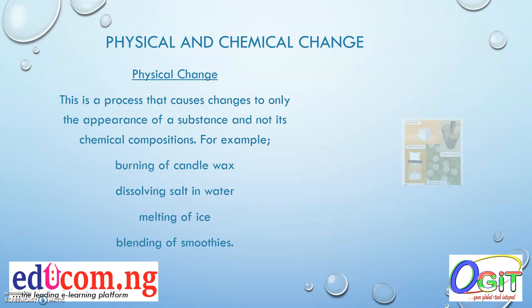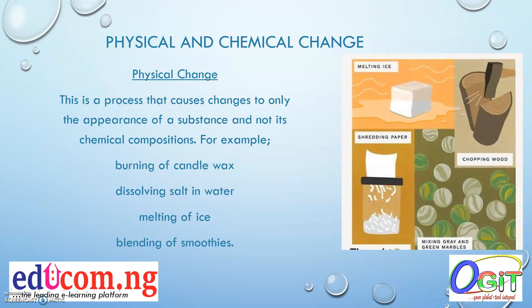Many things around us undergo different changes. We need to differentiate between physical and chemical changes, which are the main types of changes that occur to matter. A physical change is a process that causes changes only to the appearance of a substance and not its chemical composition — for example, the burning of candle wax.